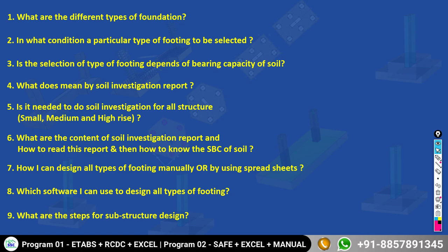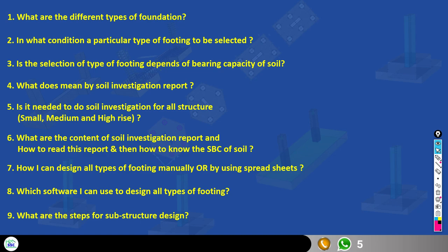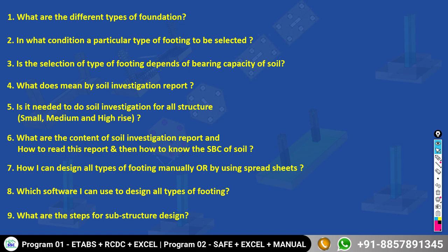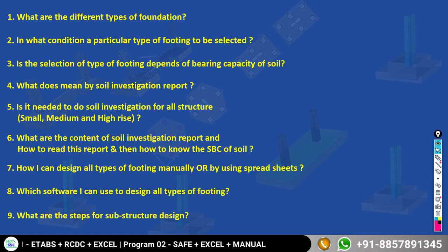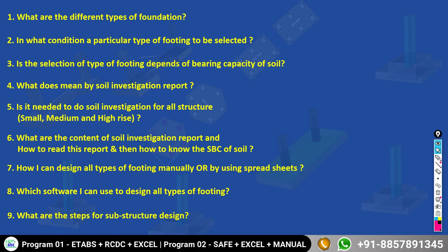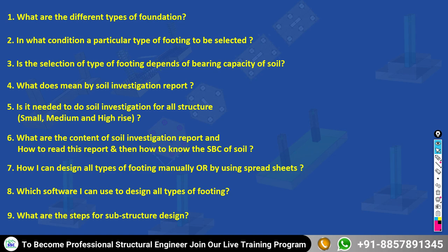For a simple box footing, should you go manual, spreadsheet, or software? Under which situation is software needed, and what different softwares are available for substructure design? If given a G+20 building, what steps do you follow, what information do you need, and how do you complete the project from architectural plan to releasing drawings for site execution? Most importantly, can we trust software results, and how can we validate them? Many beginners lack confidence about whether their software output is right or wrong.